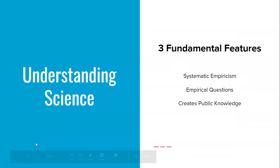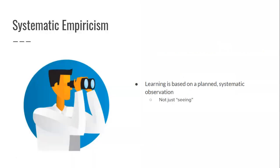The next piece talks about understanding science and what it means. The book points out three fundamental features of science: systematic empiricism, empirical questions, and creating public knowledge. Starting with systematic empiricism: learning is based on a planned, systematic observation — not just seeing things around us. When we are being systematic, we approach something with a plan in place, following specific steps in order to make a specific observation.